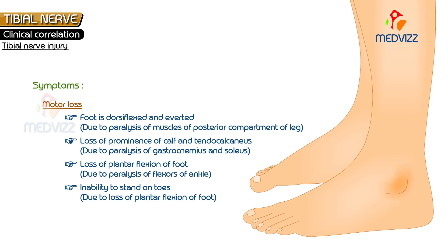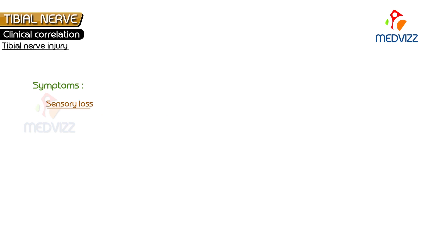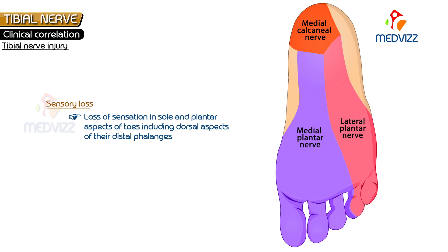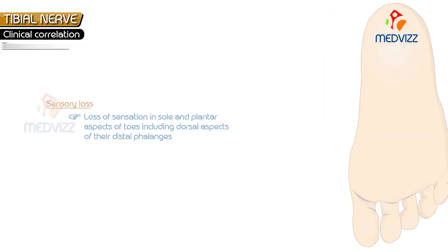Regarding sensory loss due to tibial nerve injury, there is loss of sensation in the sole and plantar aspects of the toes, including the dorsal aspects of their distal phalanges, mainly due to involvement of its cutaneous branches.